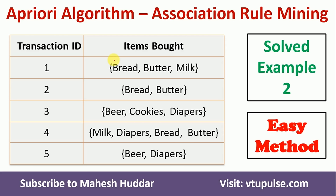Hi, welcome back. In this video, I will discuss how to apply the Apriori algorithm to generate strong association rules for the given dataset. This is solved example number 2. The link for other solved examples is given in the description below.